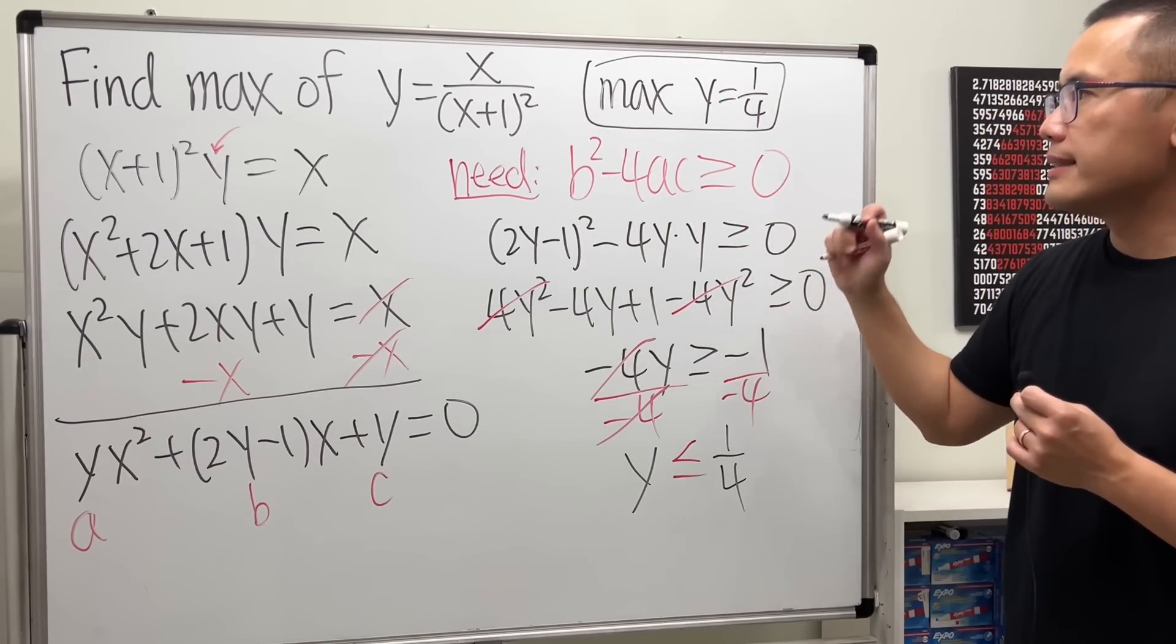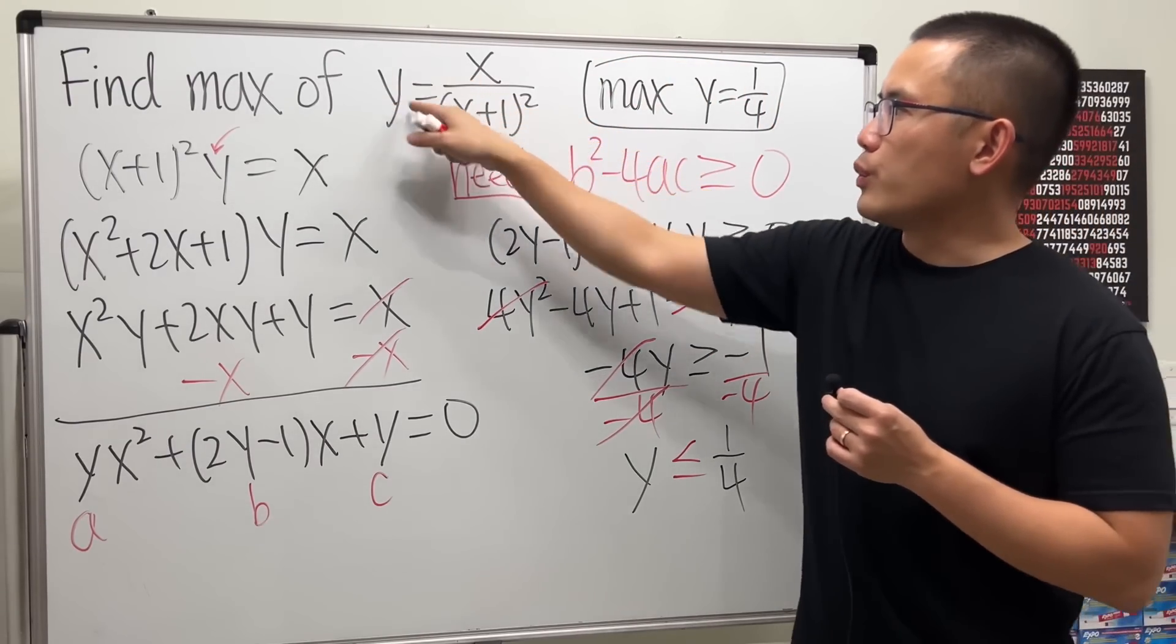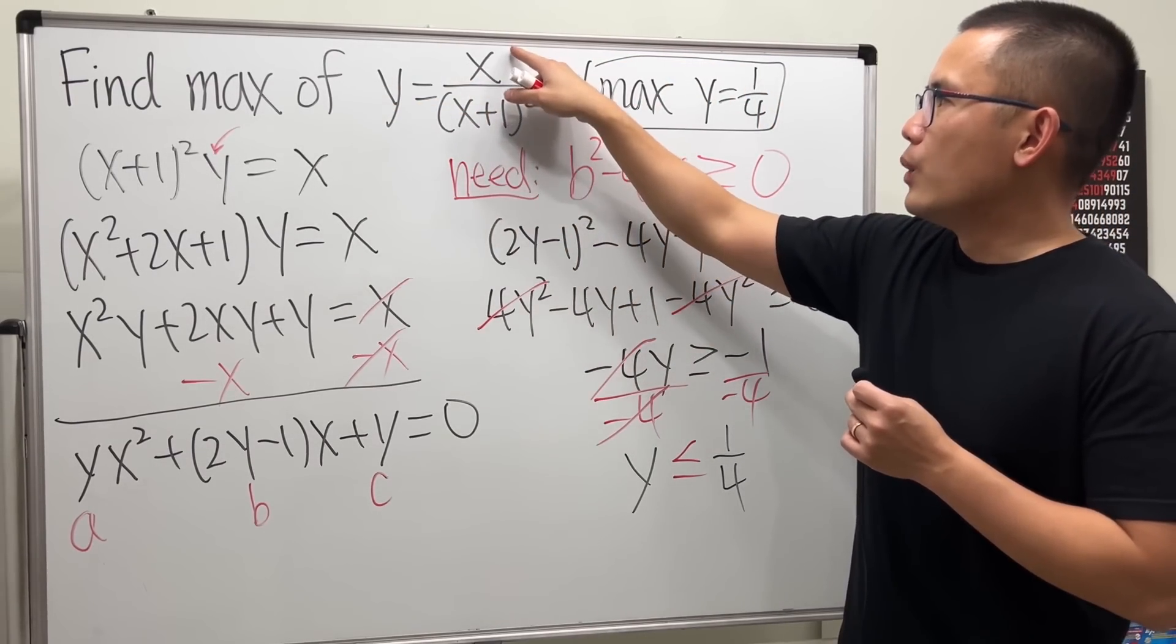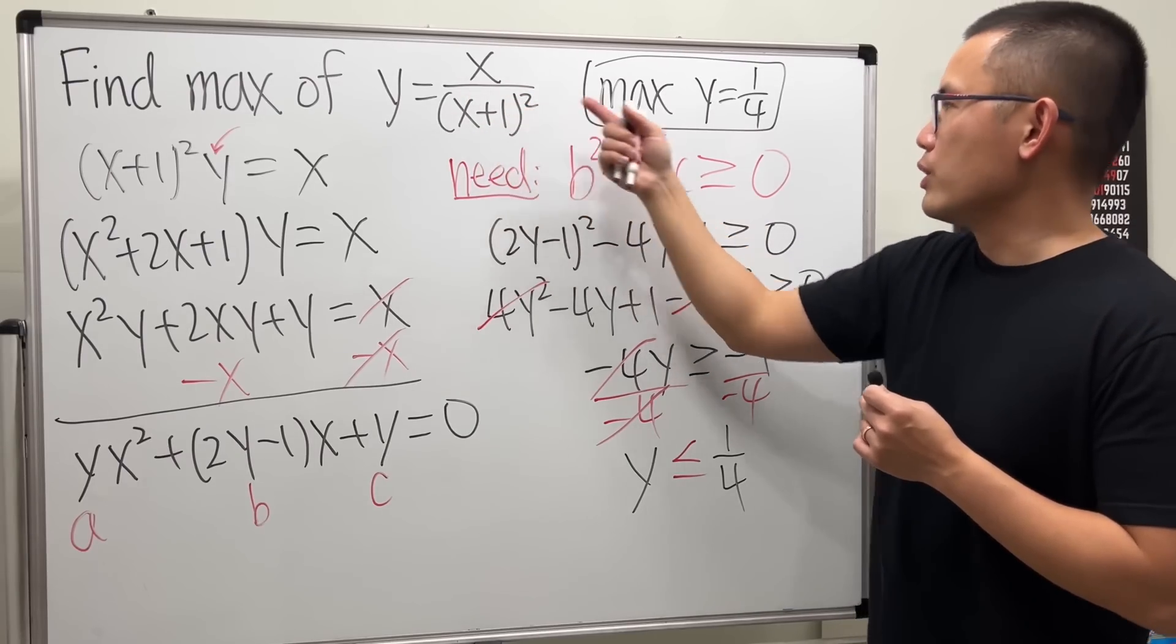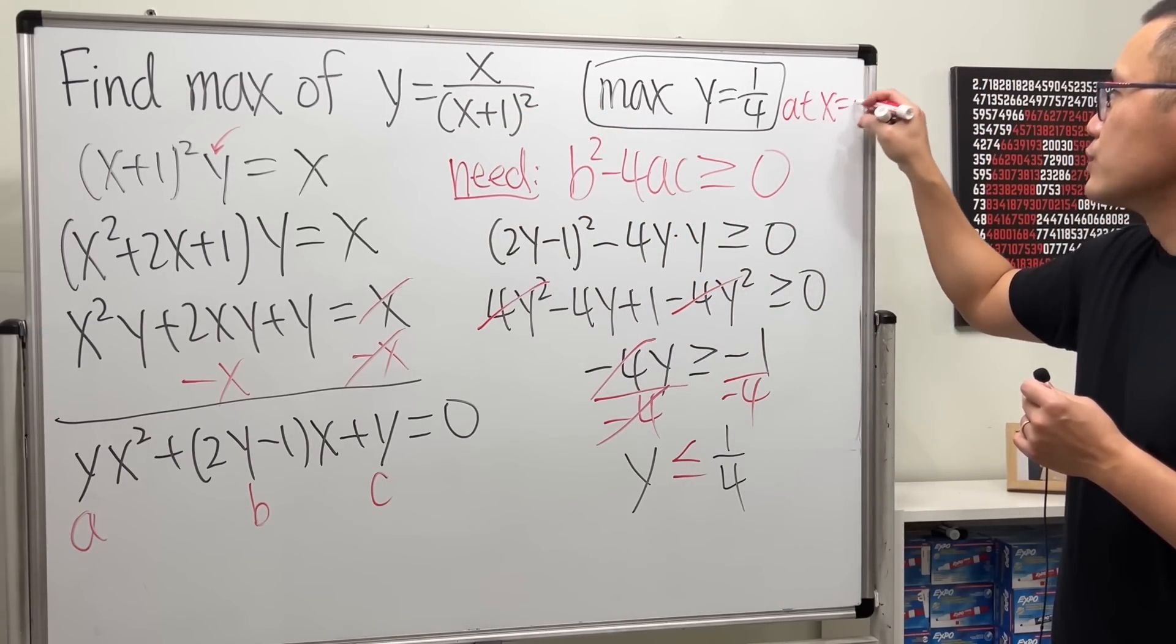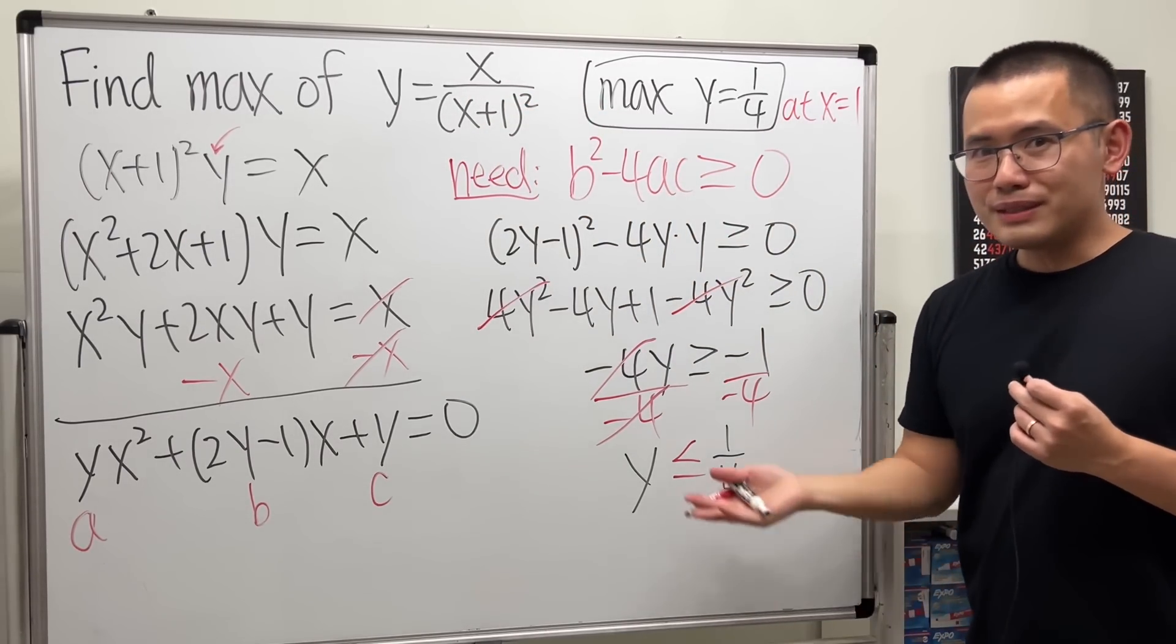And if you care to find out where that's going to be, just solve the equation. Or you can just look at it. 1 over (1 plus 1) squared is 1 over 4. So, I will just tell you, at x equals 1. So, yeah, that's it.